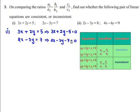If we compare these two equations with the standard equations a1x plus b1y plus c1 equals 0 and a2x plus b2y plus c2 equals 0, we get a1 equals 3, b1 equals 2 and c1 equals minus 5. In the similar way a2 equals 2, b2 equals minus 3 and c2 equals minus 7.